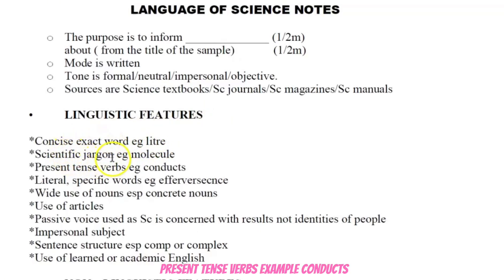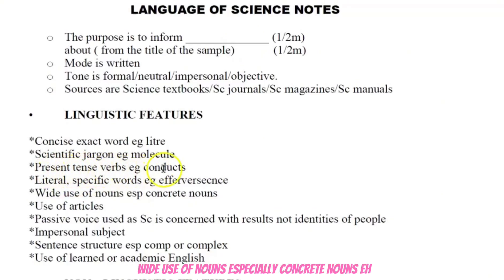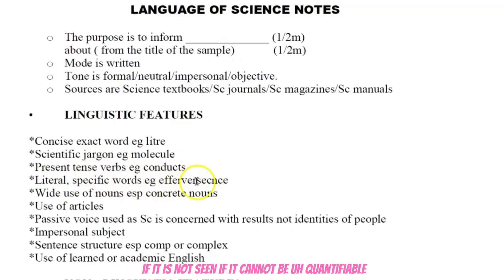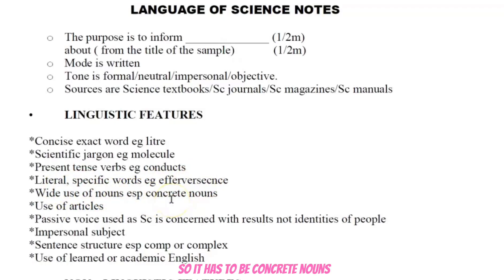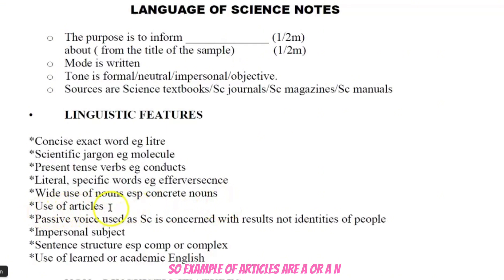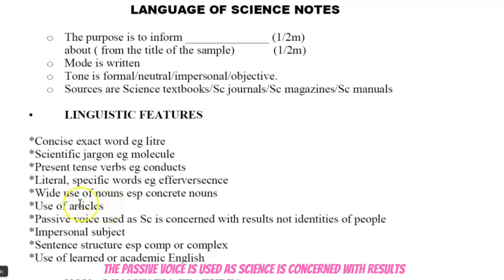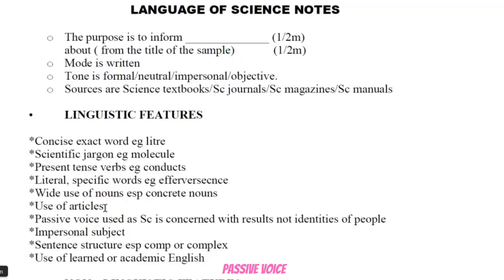Present tense verbs — for example 'conducts' — everything is in present tense. Literal or specific words, for example 'effervescence.' Wide use of nouns, especially concrete nouns, because science deals with facts — if something cannot be seen or quantified, science does not deal with it. The use of articles — a, an, and the — remember that articles are a part of speech. Passive voice is used because science is concerned with results, not the identities of people. Active voice is subject-verb-object; passive voice is inverted.